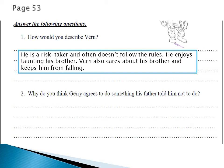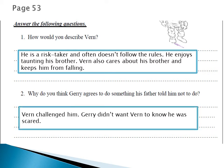Number two: why do you think Jerry agrees to do something his father told him not to do? Jerry at the beginning said no, they shouldn't leave the shelter because their dad told them to stay. Though he knew what he was doing was wrong, he listened to Verne. At the beginning of the story, Verne challenged him and called him a runt and scared, so Jerry wanted to prove to Verne that he was not scared — that's why he followed him.